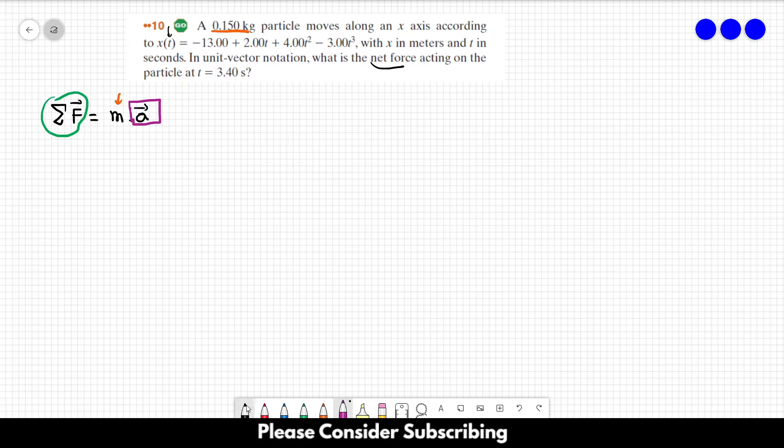How do we find the acceleration? Remember that acceleration is the second derivative of position with respect to time. If we derive this equation twice, we find the acceleration.